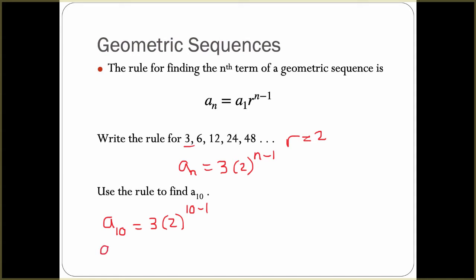This is a_10 = 3 times 2 to the 9th power. If you plug this in your calculator, you will get the number 1536.